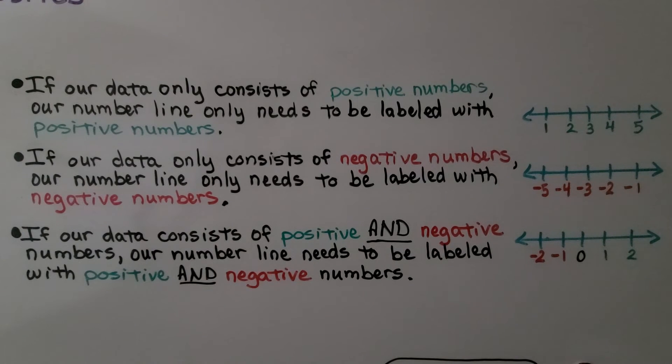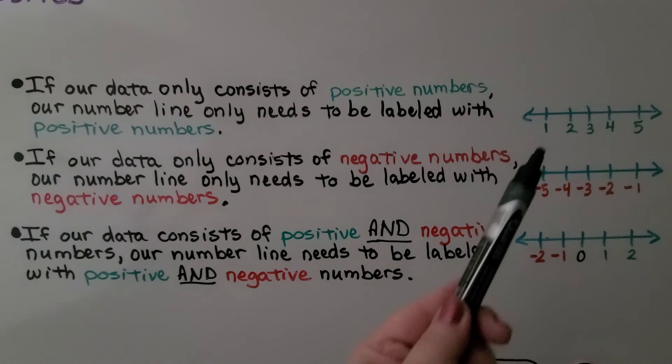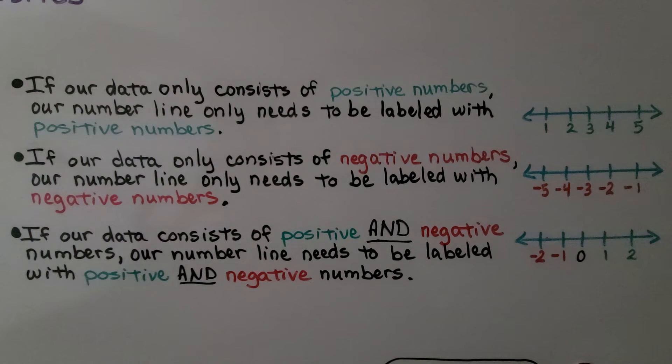If our data, the given values, only consist of positive numbers, our number line only needs to be labeled with positive numbers. And if our data only consists of negative numbers, our number line only needs to be labeled with negative numbers. But if our data consists of positive and negative numbers, our number line needs to be labeled with positive and negative numbers, with a 0 between them.